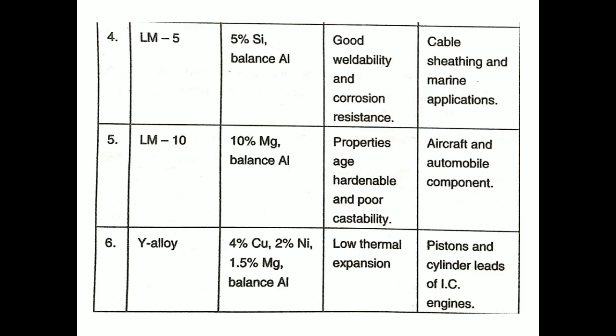LM5 has composition of 5% silicon and balanced aluminium. Properties of LM5 include good weldability and corrosion resistance, with application in marine industry. LM10 has composition of 10% magnesium and balanced aluminium, with good hardenability but poor casting properties, and is used in aircraft and automobile components.